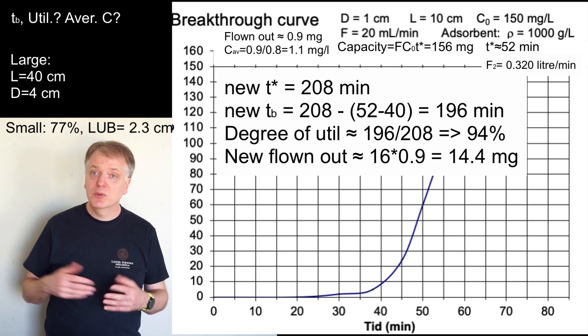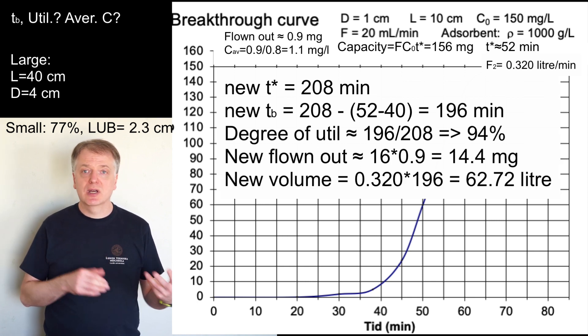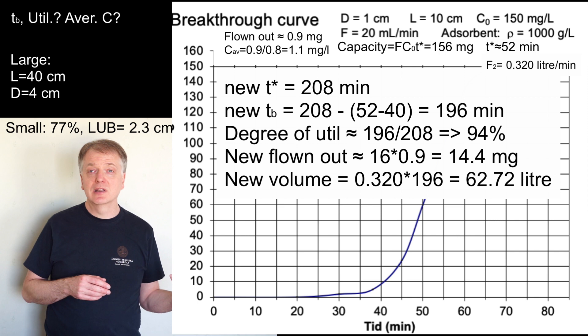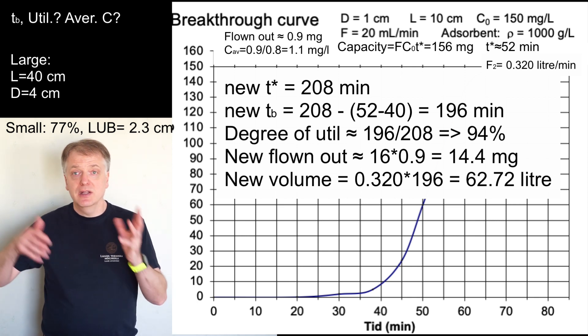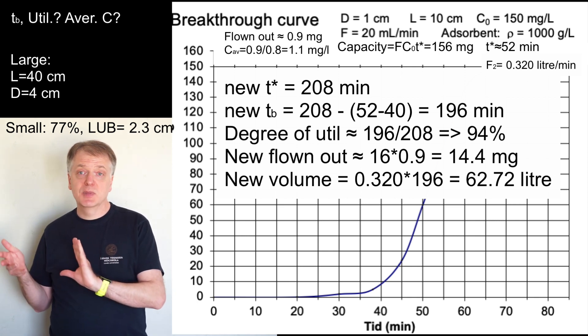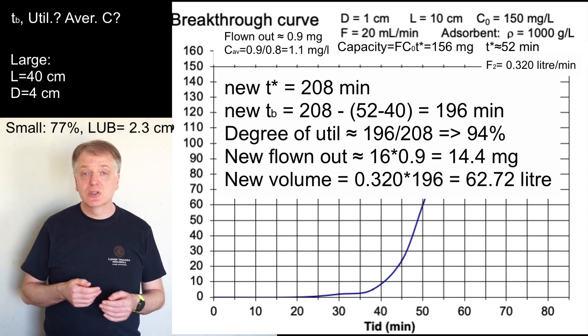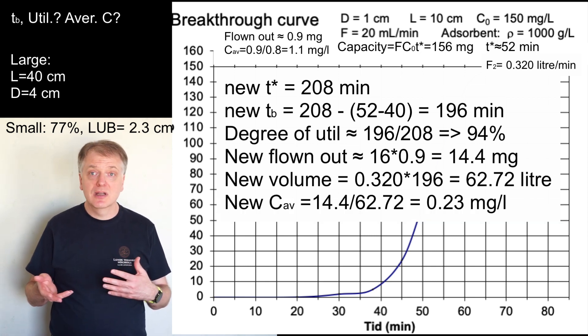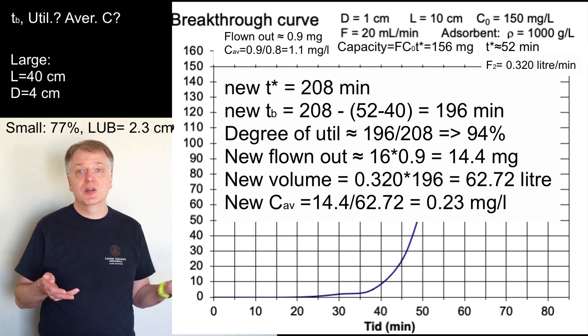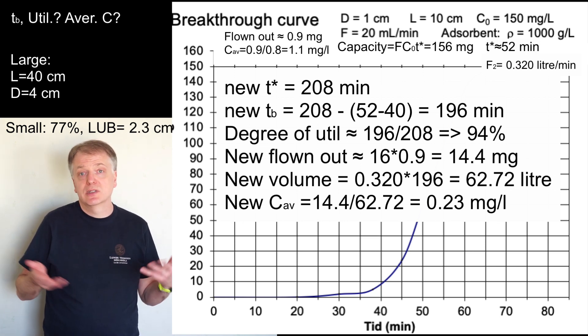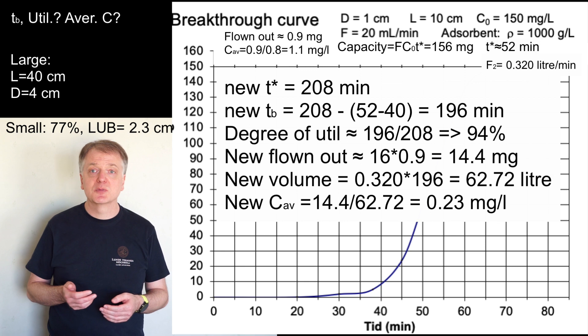And the volume that has flowed out is now 320 times 10 to the power minus 3 liters per minute times 196 minutes which gives us 62.72 liters. And our average concentration then becomes 14.4 divided with 62.72 which is 0.23 milligrams per liter, which is much lower than the 1.1 milligram per liter we had in the small column.